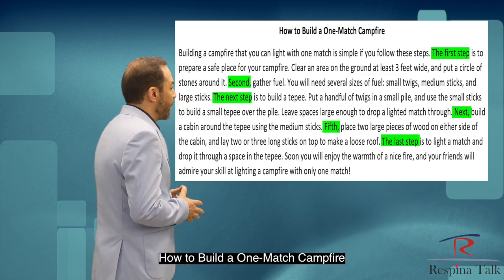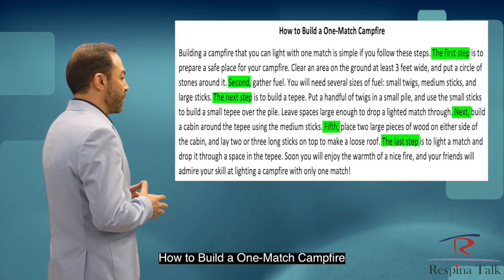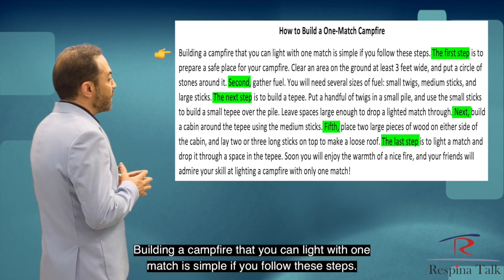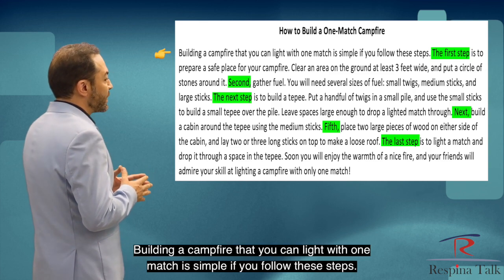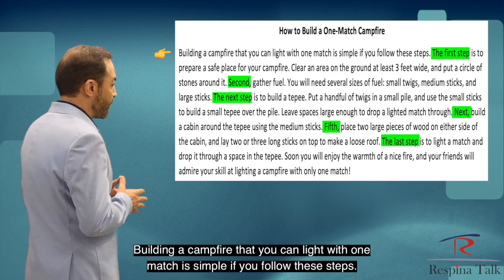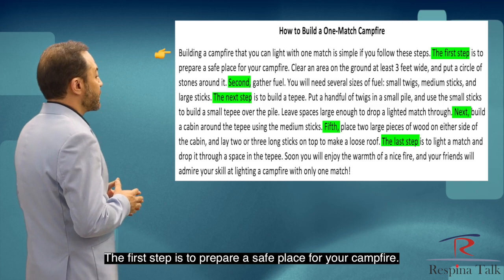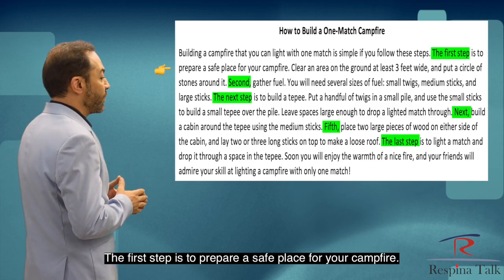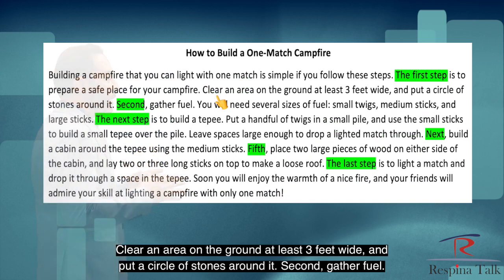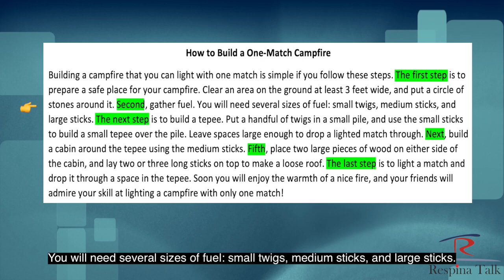How to build a one-match campfire. Building a campfire that you can light with one match is simple if you follow these steps. The first step is to prepare a safe place for your campfire. Clear an area on the ground at least three feet wide and put a circle of stones around it. Second, gather fuel. You will need several sizes of fuel: small twigs, medium sticks, and large sticks.